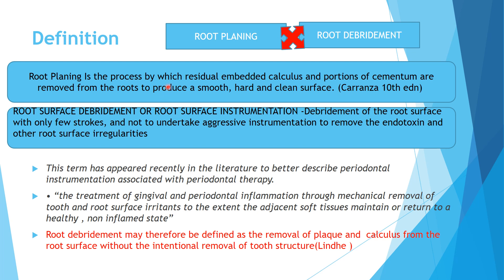How is root debridement different from root planing? Debridement is the debridement of the root surface with only a few strokes and not undertaking aggressive instrumentation to remove the endotoxin and other root surface irregularities. We will not be purposely removing the surface of the cementum. The portions of cementum will not be removed in root debridement — it is just the removal of plaque and calculus without removal of the tooth surface.